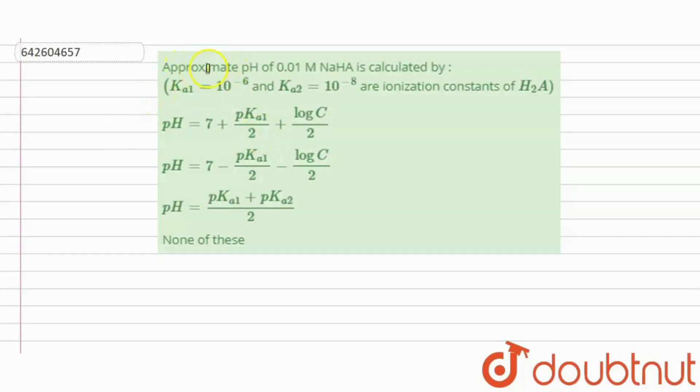Hi everyone, let's take a question where the question says: Approximate pH of 0.01 molar NaHA is calculated by. So here we have to calculate the pH value for this given salt, and here the values of Ka1 and Ka2 are also given that are the ionization constants of H2A.